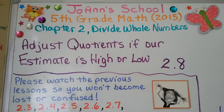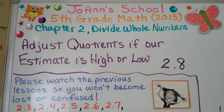Lesson 2.8: Adjusting Quotients — if our estimate is high or low. This entire chapter is about long division and dividing. If you missed the previous lessons, they're linked in the description.